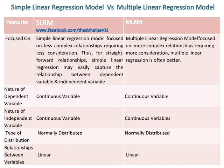The nature of both the dependent variable and independent variable in Simple Linear Regression Model and Multiple Linear Regression Model are continuous variables. The type of distribution in both models is normal distribution, and the relationships between variables in both models are linear.